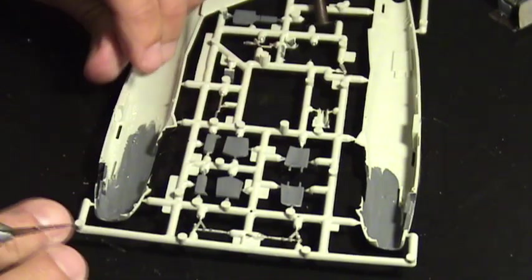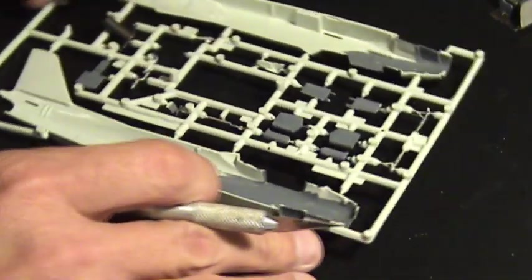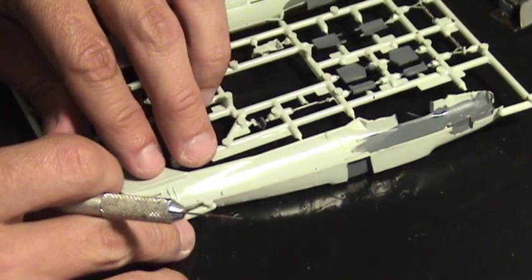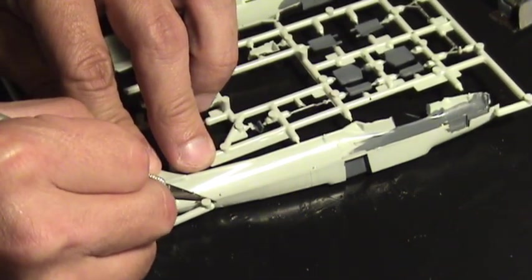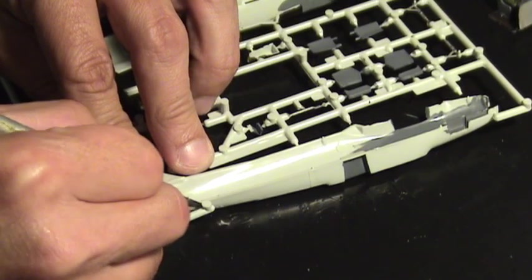Proceed to remove the fuselage from the sprue. Use a hobby knife or a pair of wire cutters to free the parts. Be careful not to damage the fuselage when cutting.